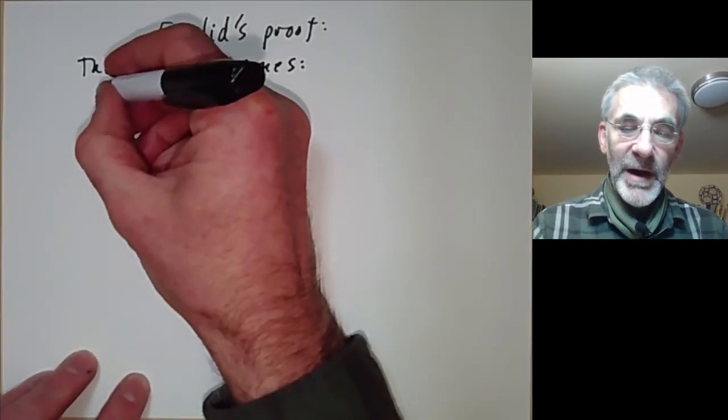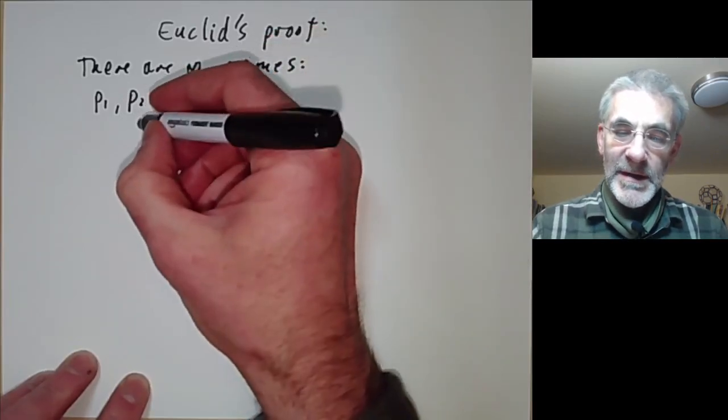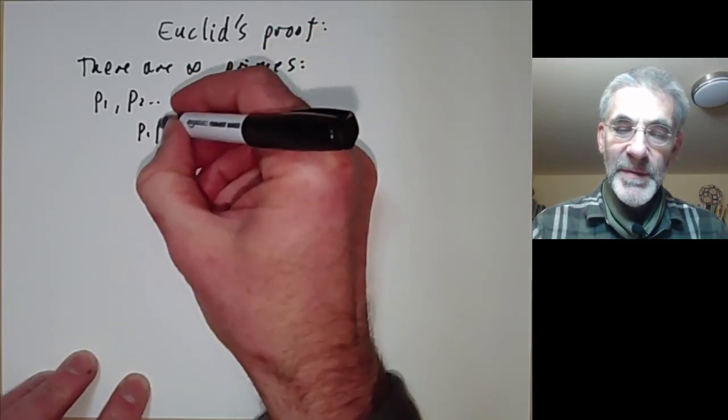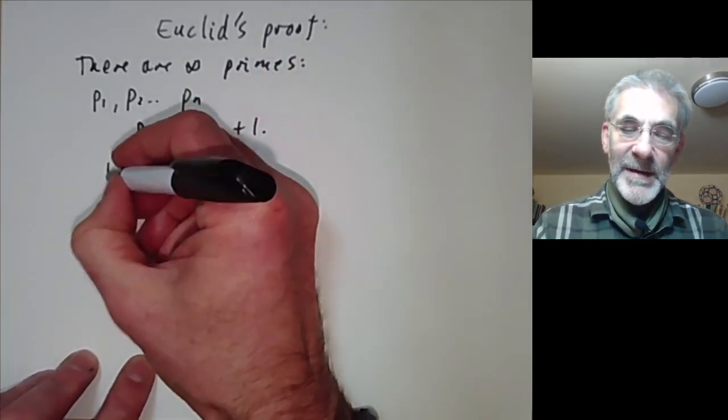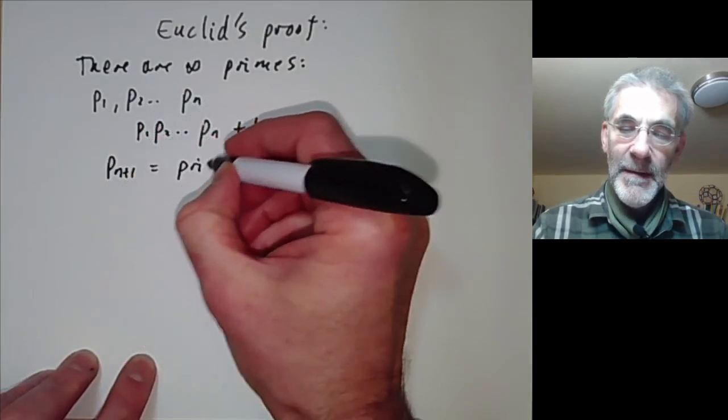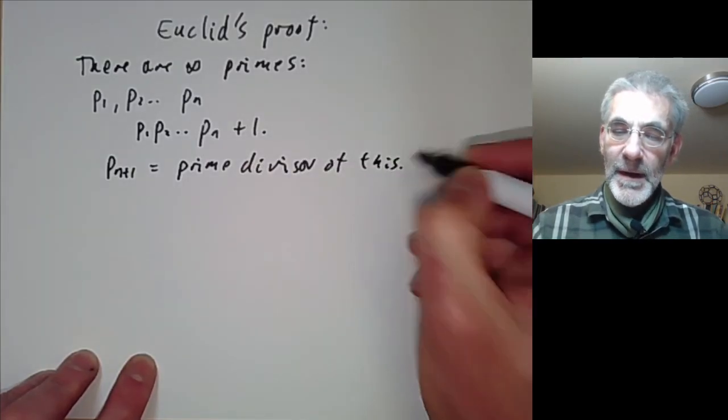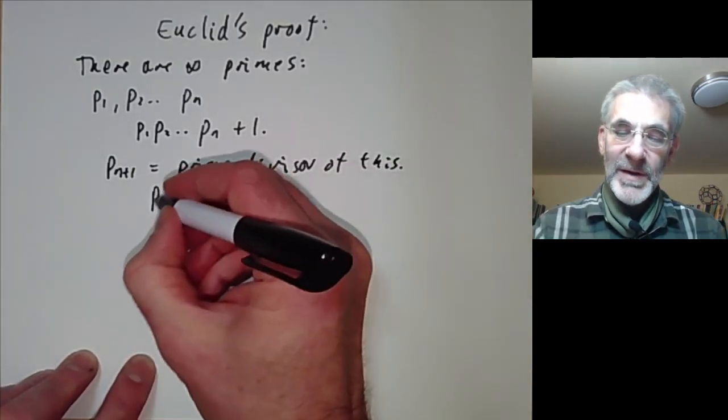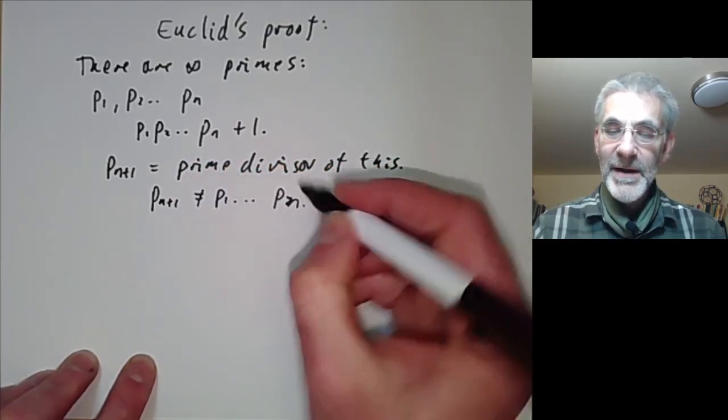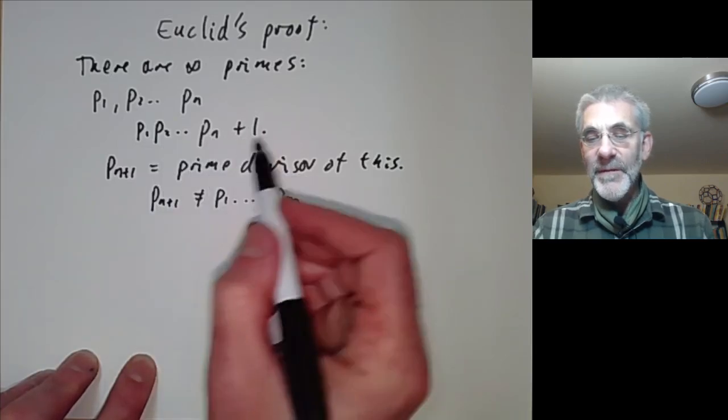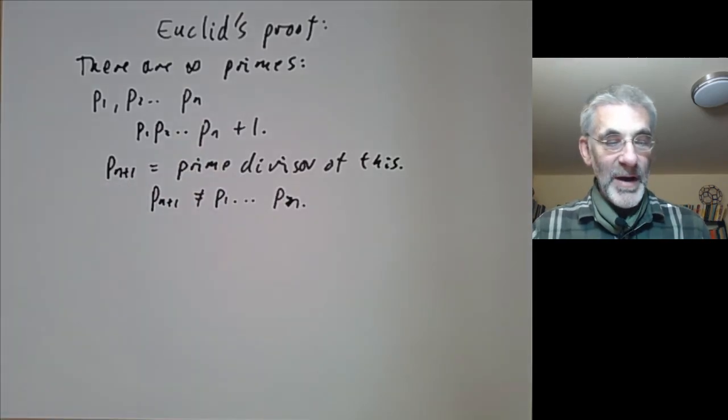Suppose you've got a finite number of primes p1, p2, up to pn. What Euclid does is he takes the product p1 times p2 times pn and then adds one. And then we take pn+1 to be a prime divisor of this. And you notice that pn+1 is not equal to p1, p2, up to pn because if it was then it would divide one. So for any finite set of primes we can find another prime not in the set.